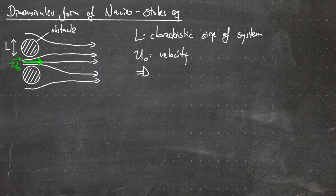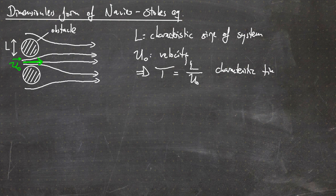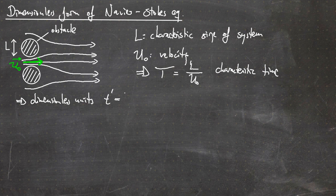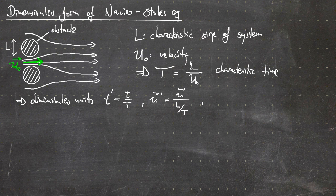From these two quantities we can also define capital T, a characteristic time, using the characteristic length capital L divided by capital U. Then introducing the dimensionless units: T prime being T divided by capital T, U prime being U divided by L over T, and L prime being R over L.